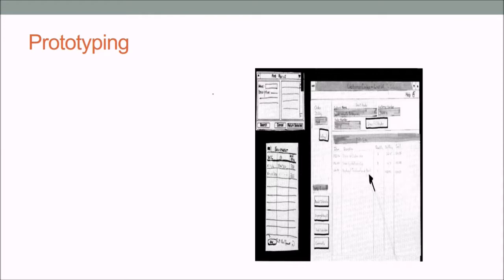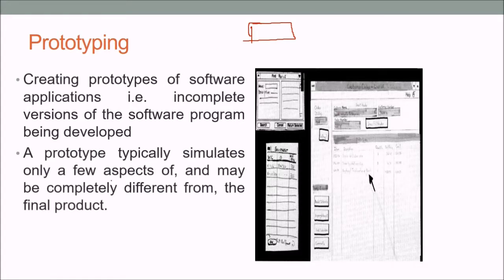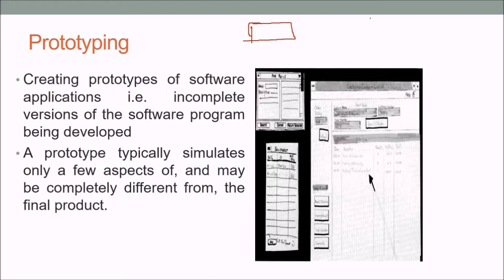What is prototyping? You create a prototype of a software — not a complete software, but a basic or show version of the program being developed. A prototype typically simulates only a few aspects, maybe 10% or 20%, and may be completely different from the final product. Prototyping is done when requirements are not clear to either you or the user, so with minimum requirements you make a prototype.